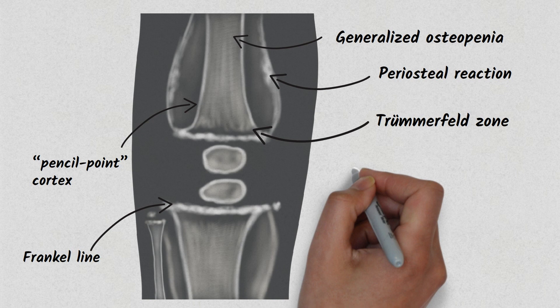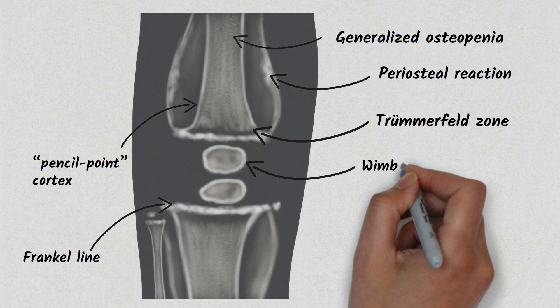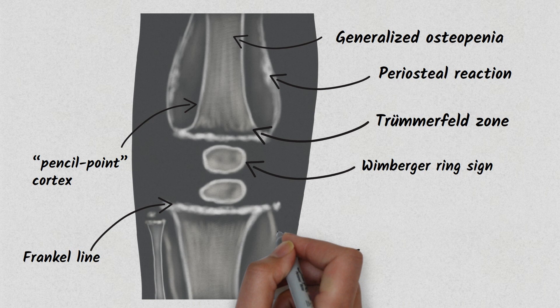Next, this circular opaque radiologic shadow surrounding the epiphyseal center of ossification is called Wimberger ring sign, which may result from bleeding. Here you can see radiopaque metaphyseal spurs that result in cupping of the metaphysis.